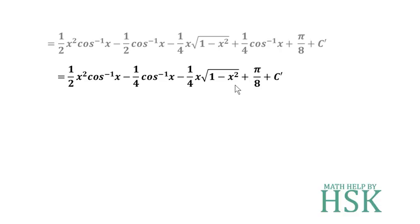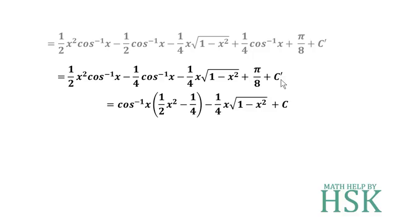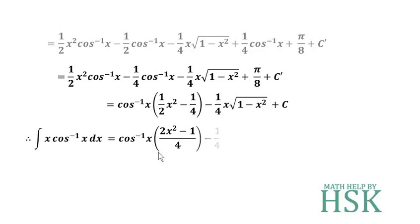Taking cos⁻¹(x) as a common factor and replacing the constant terms with C, we obtain the final answer: the integral of x·cos⁻¹(x) dx = cos⁻¹(x)·[(2x² − 1)/4] − (1/4)x·√(1 − x²) + C.